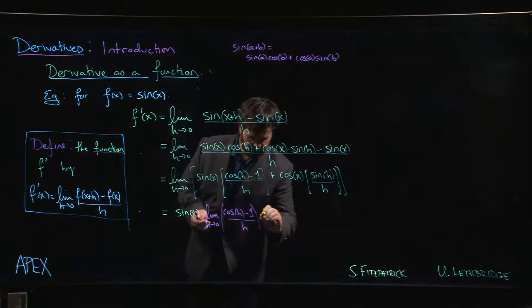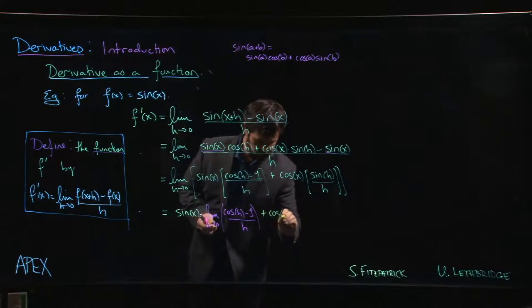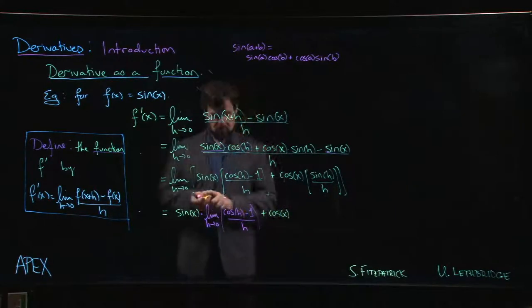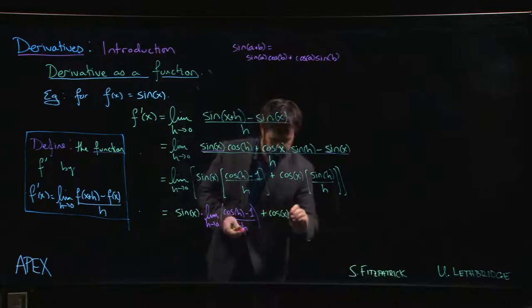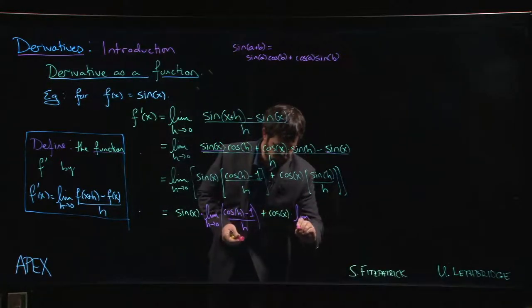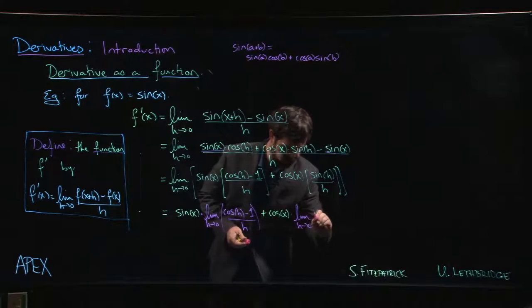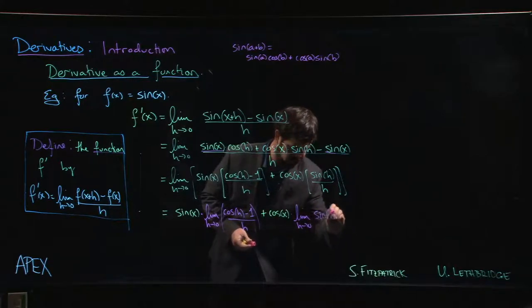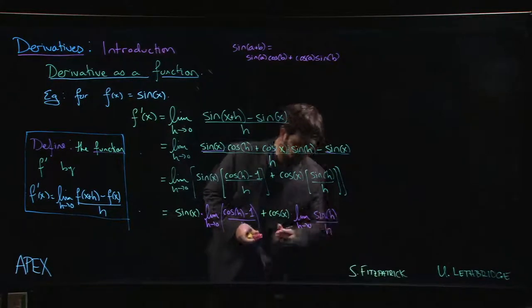Plus cos x times the limit, h going to 0, sin of h over h.